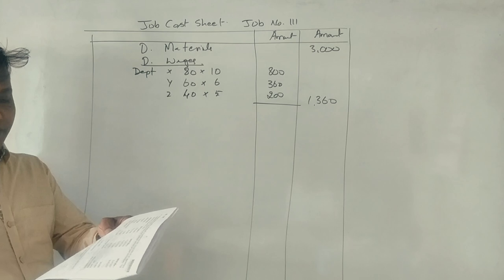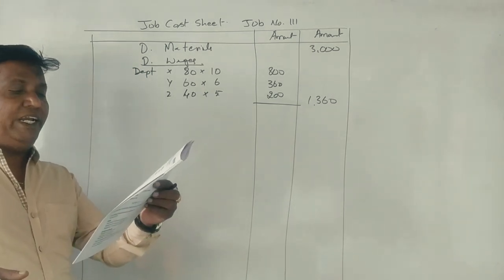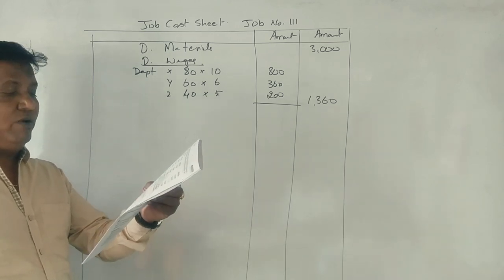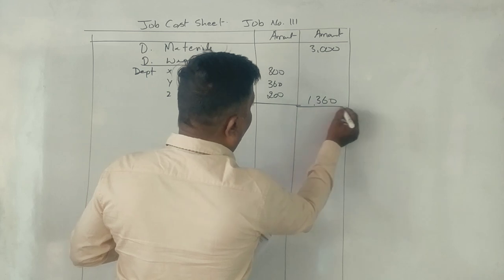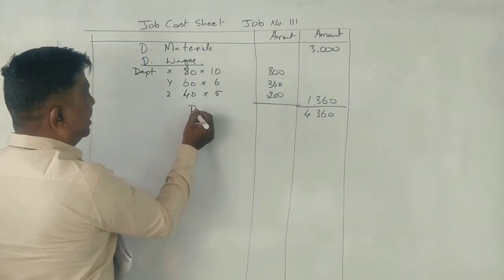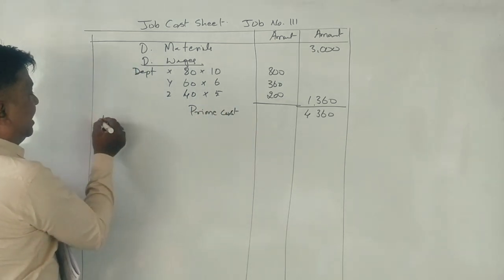Direct expenses. Overhead expenses for three departments were estimated as follows. Variable overheads. Department X, Y, Z. First, it is the prime cost, 4,360 rupees.